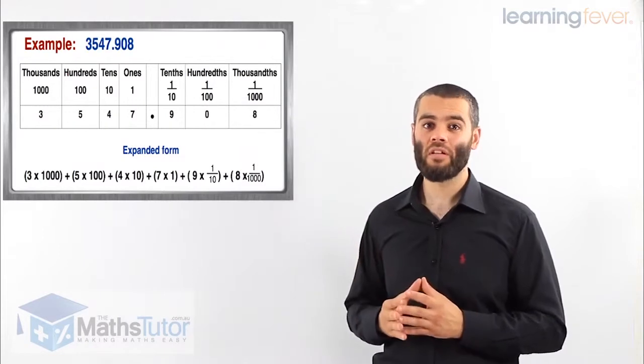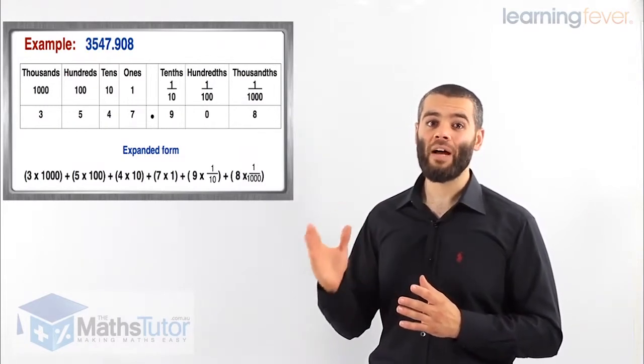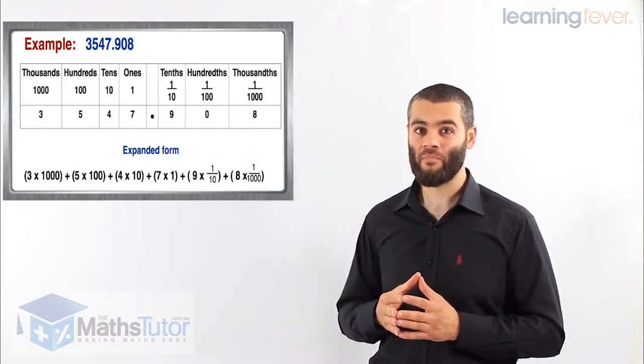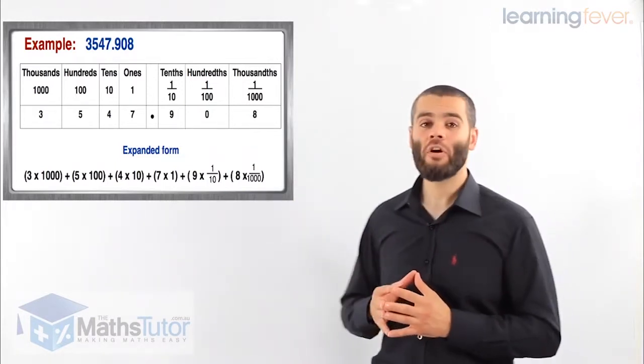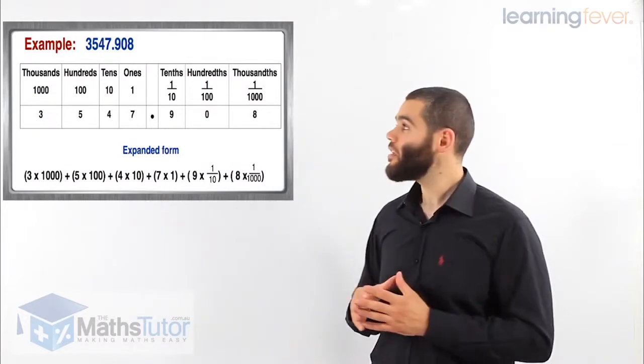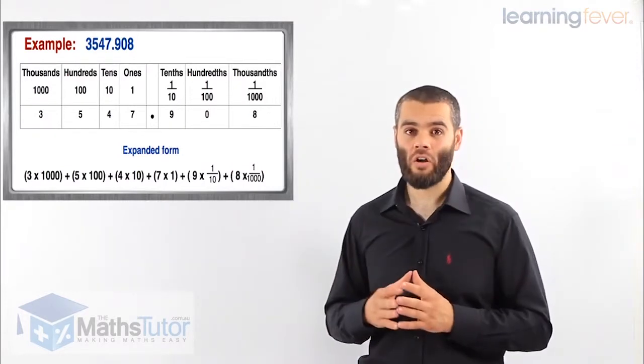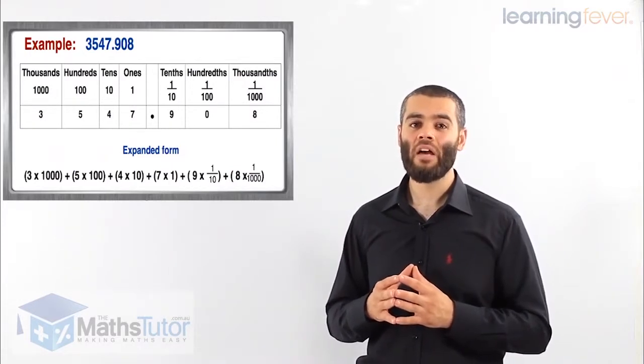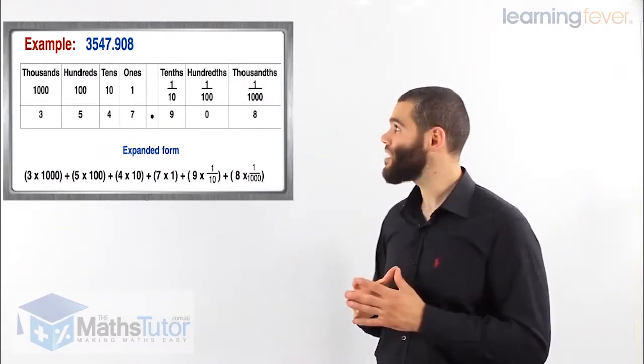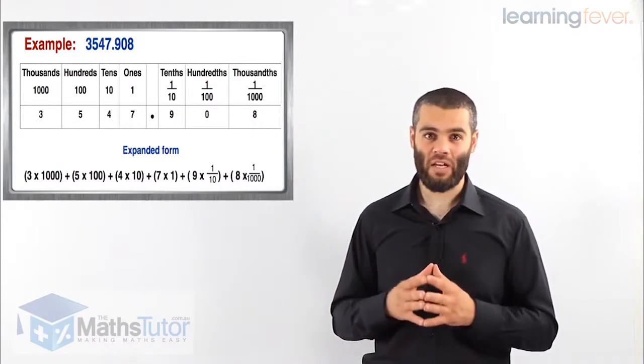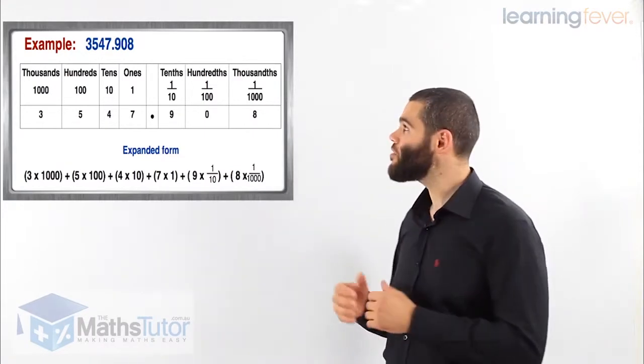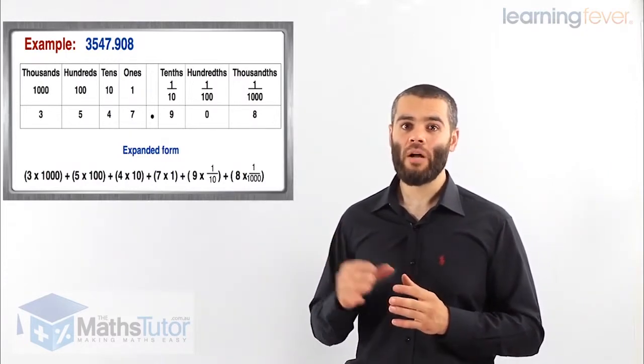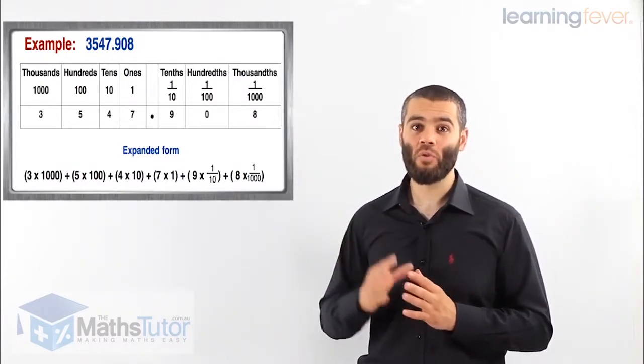Then we have point. So the numbers that come after the point are parts of numbers, they're not actually whole numbers. We have .908. The 9 is in the tenth column, which is 1 out of 10. So here we're saying 9 out of 10. Then we have the hundredth column. The 0 is in the hundredth column, which means a number out of 100, a very small number.